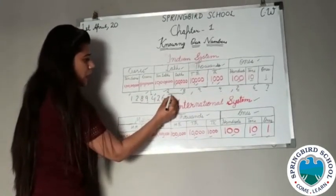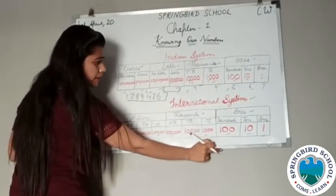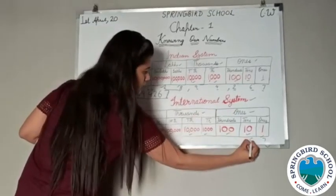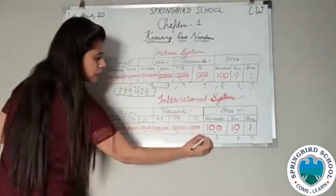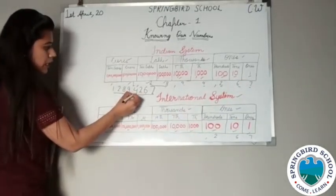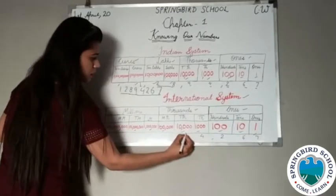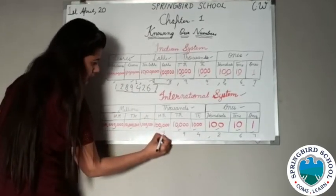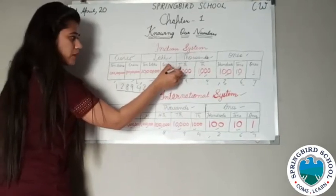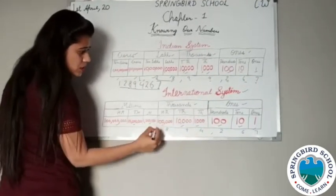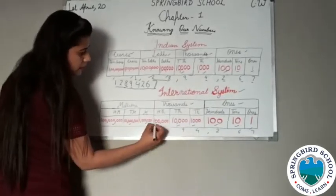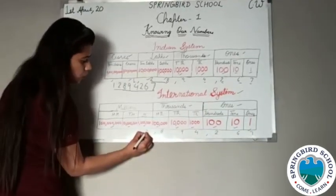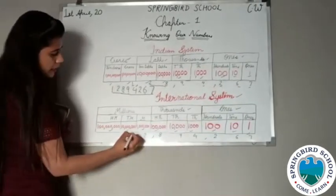I will take the same example and place the same number in the international place system. The first number from the right is seven, then six, then two — ones head completed, so a comma. Then four at thousands place, nine at ten thousands place, eight at hundred thousands place — this head is now complete, so a comma. Now what is left? Two comes at the million place, then one at the ten million place.